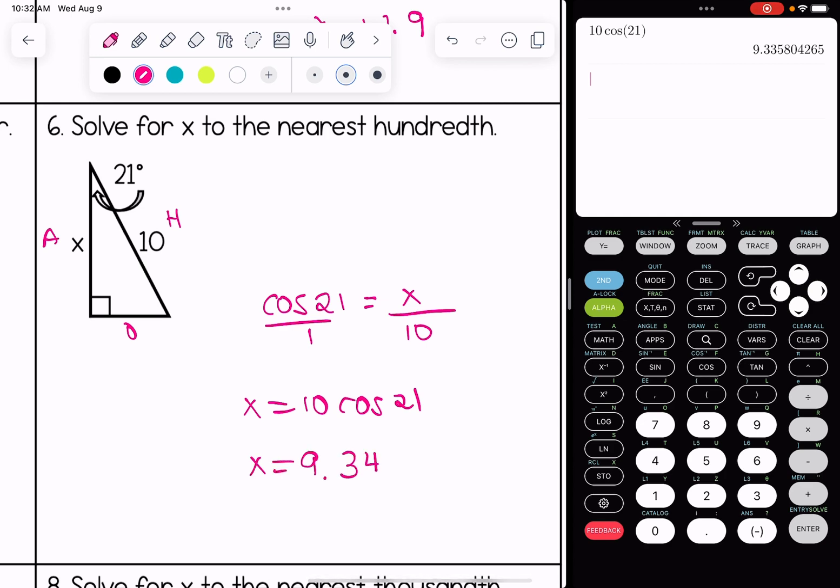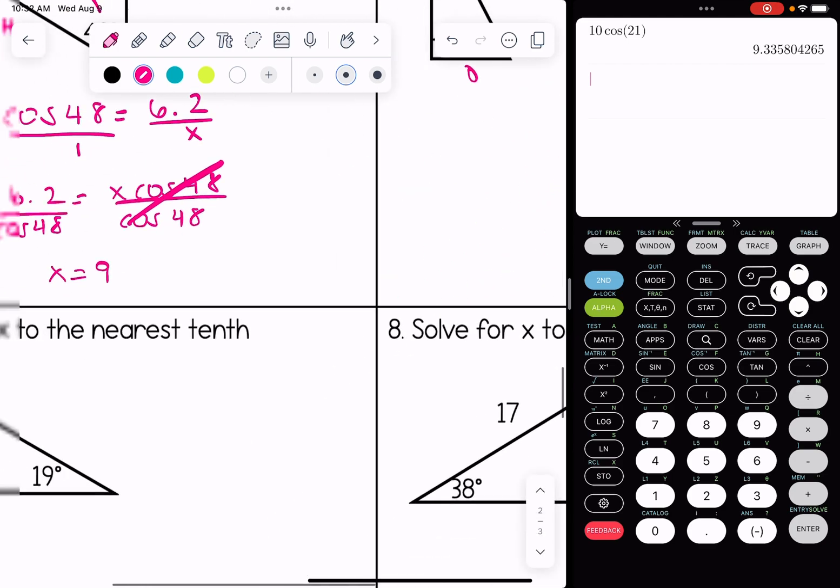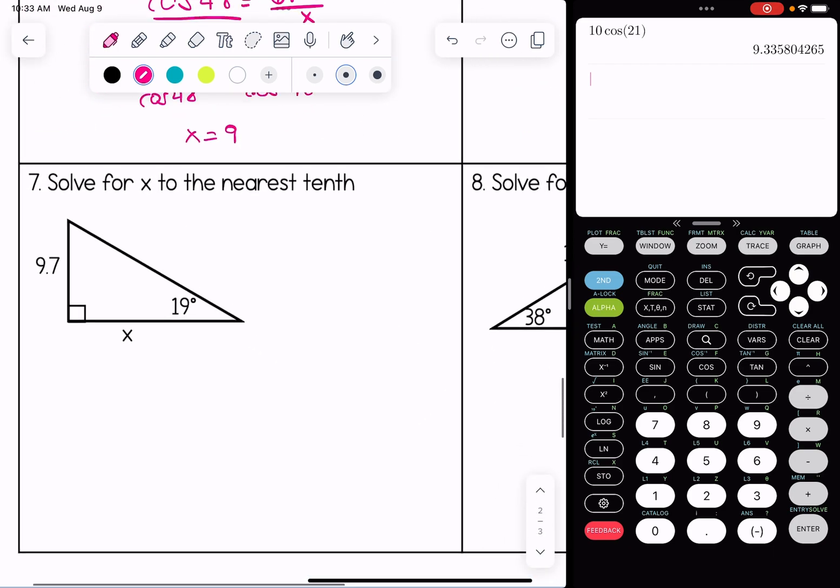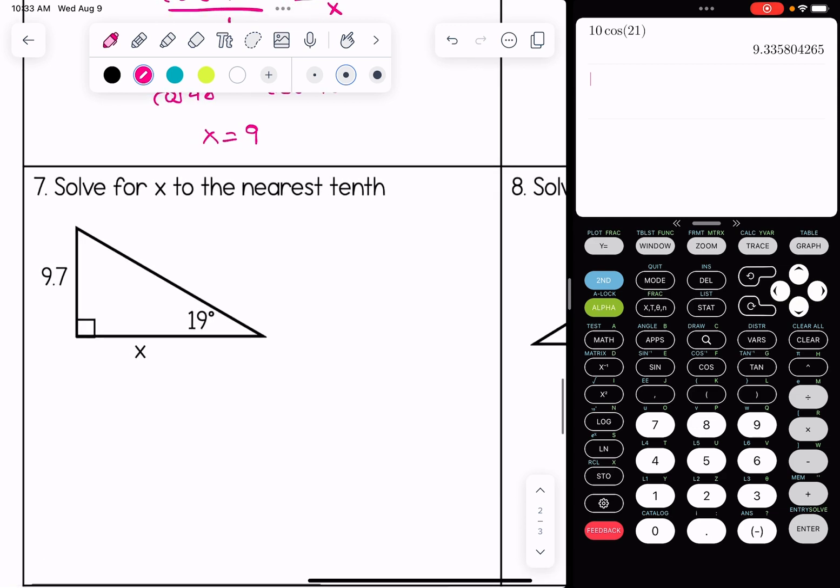Two more. Number seven, solve for x to the nearest tenth. Our hypotenuse is blank, the opposite side is 9.7, the adjacent side is x.